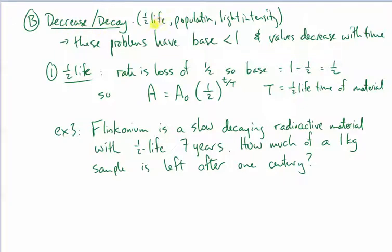Common applications of this are half-life of radioactive materials, populations in urban centers that are declining like cities like Detroit, and light intensity as you travel through water. In each case, these exponentials have bases less than 1. As a result of repeated multiplication by exponentials, the values will decrease with time.